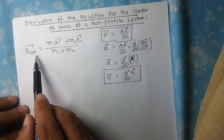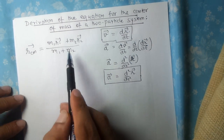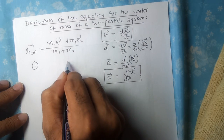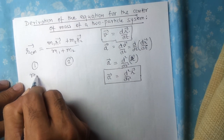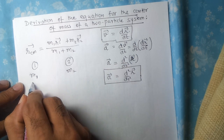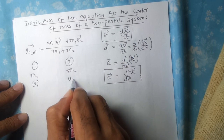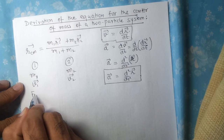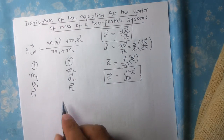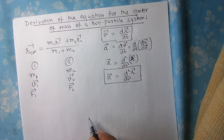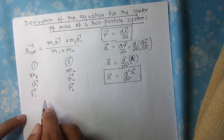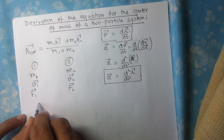So let's start. This is what we want to derive. Let us say we have a two-particle system — particle 1 and particle 2. The masses are M1 and M2, their velocity vectors are V1 and V2, and the external forces acting on them are F1 and F2.